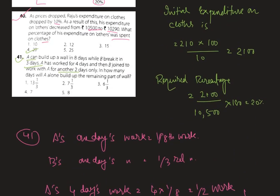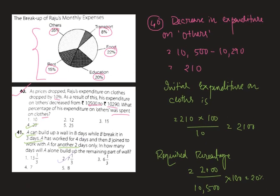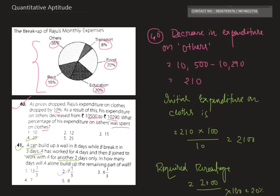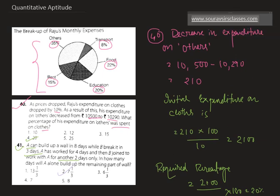Therefore, the required answer is option 2. So we have solved two problems: one based on this pie chart and another one is a different problem. To know more about quantitative aptitude, the conceptual portion and the formulas required to solve these questions in a faster way, you can call us or drop a message at 9836793076 or 9874822756, or check our website www.saurassistclasses.com. That's all for today, thank you very much.